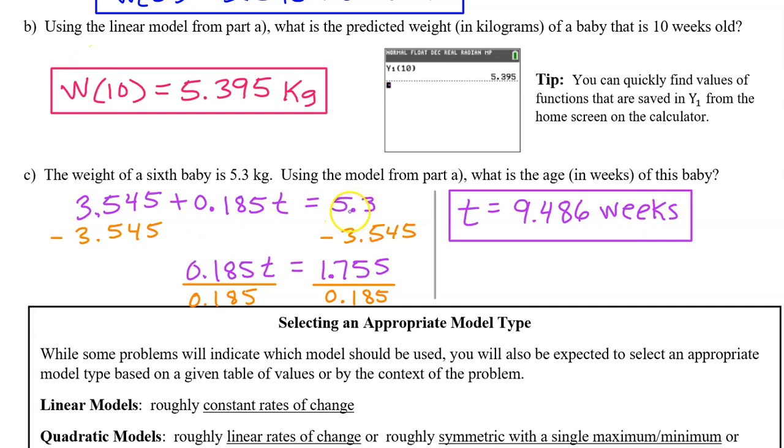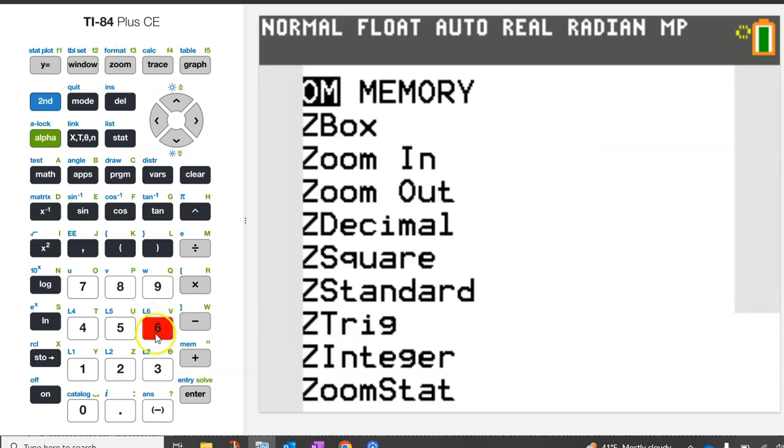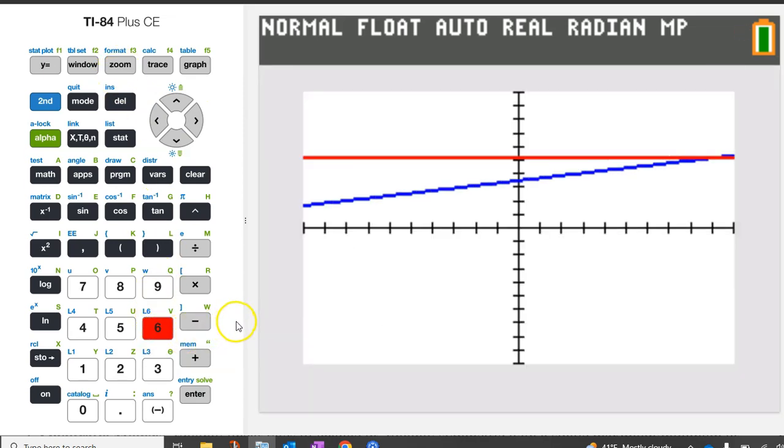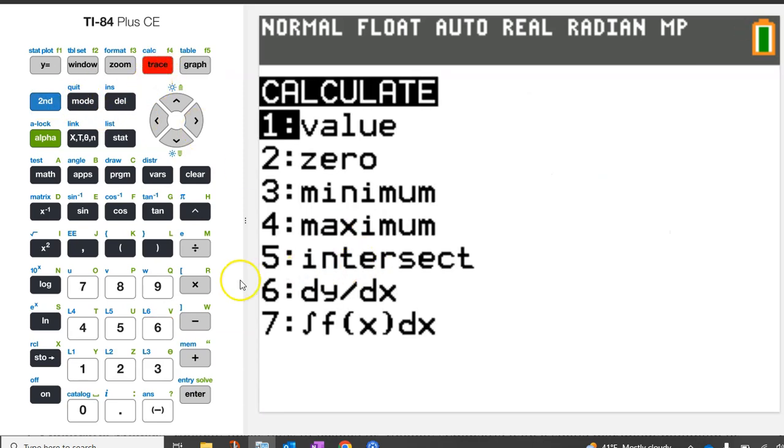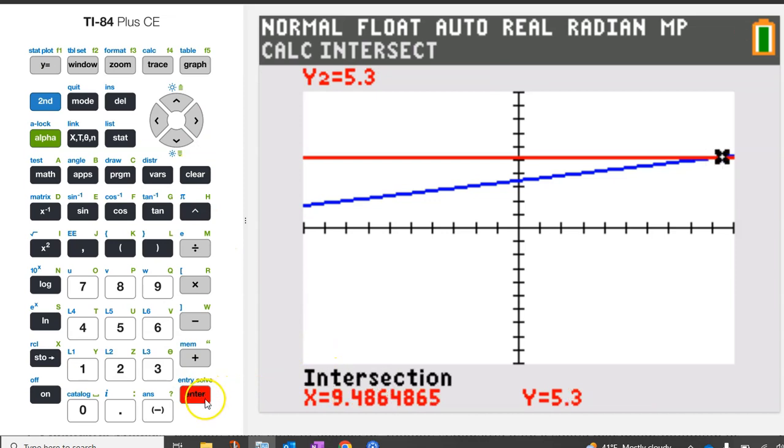Here's how you can solve this equation by graphing. Type in 5.3 as its own equation. Let's type it in as y2. Hit zoom 6 for a standard 10 by 10 window and let's see what we get. Zoom 6. We need the intersection point of these two lines, which I can see right here. So let's do 2nd trace intersect, which is option 5, move the pointer close to the point of intersection, and hit enter three times. And there's your 9.486 again.